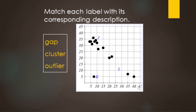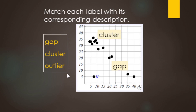Looking at different features of a scatter plot: a gap is where we're missing some data points in an area. A cluster is where a bunch of data points are grouped together. And an outlier is a point way far away from where all the other data points tend to go.